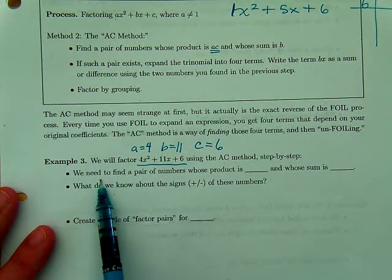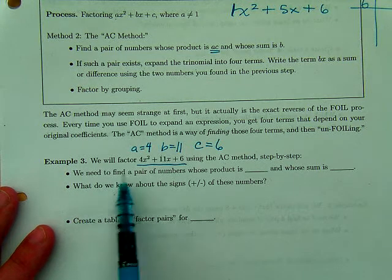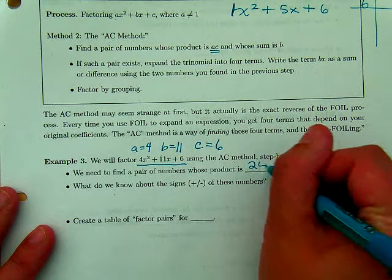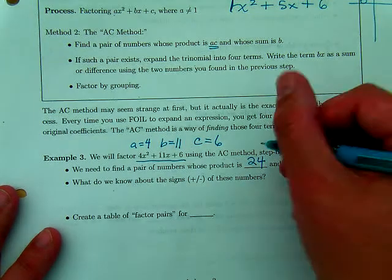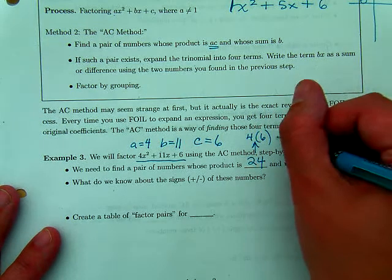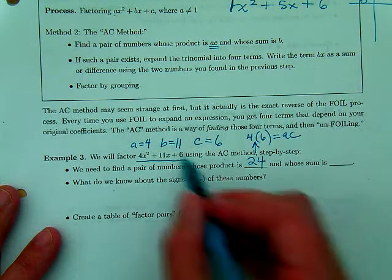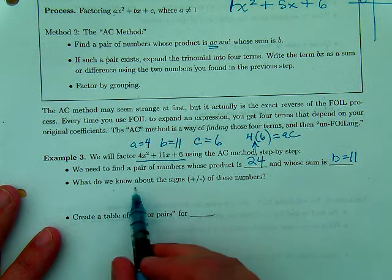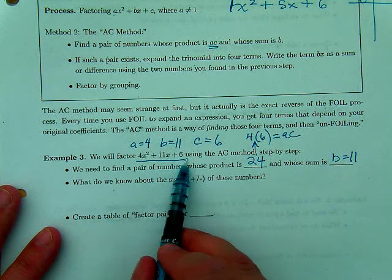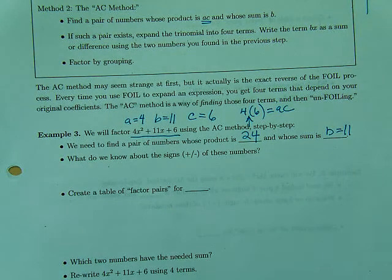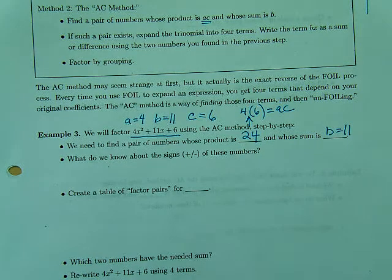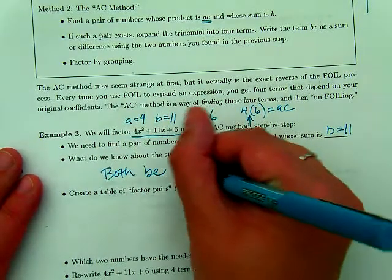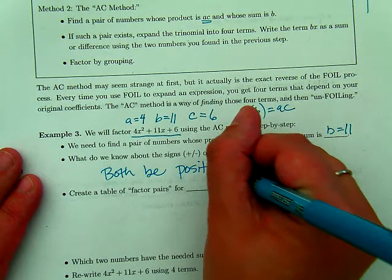Okay, so let's go down here and explore the AC method. So the first thing we're going to do is we're going to need to find a pair of numbers whose product is ac, so that's 24. Does everybody see how I'm getting 24? That's 4 times 6. That's ac. Whose sum is still 11. b equals 11. So we're still finding that sum. What do we know about the signs of the numbers? So look at the signs. What are the signs going to have to be? In order to get a positive 24 and a positive 11, tell me about the signs. Yes, they are going to both be positive. Positive, positive gives us a positive, positive.